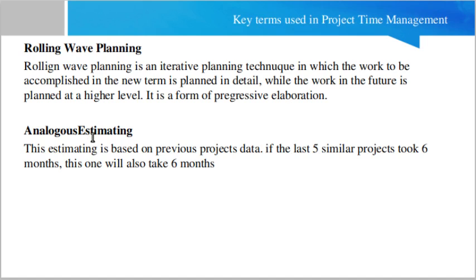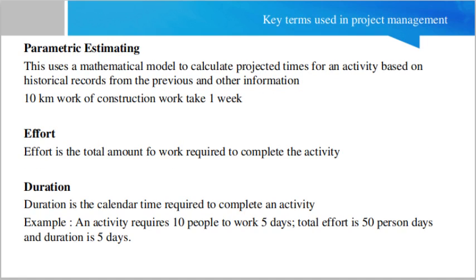The next term is Analogous Estimating. This estimating is based on previous project data. If the last five similar projects took six months, this one will also take six months. For example, if you are implementing an e-commerce solution and previously two or three similar e-commerce projects were completed within six months, you can estimate this similar project will also complete within six months. Note that expert judgment is also required in analogous estimation.